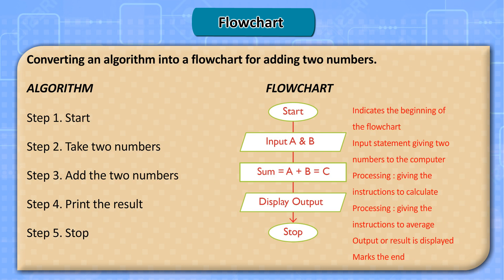Converting an algorithm into a flowchart for adding two numbers. Algorithm: Step 1 - start. Step 2 - take two numbers. Step 3 - add the two numbers. Step 4 - print the result. Step 5 - stop. Flowchart: start → input A and B → sum = A + B = C → display output → stop. This indicates the beginning of the flowchart, the input statement giving two numbers, the processing step to calculate, and the output where the result is displayed, ending the flowchart.